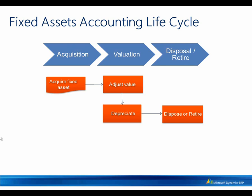An asset can be transferred from one financial dimension to another, such as one department to another department. An asset can be split to another asset if you need to further componentize the fixed asset. You can also record additional activity to an asset that does not impact valuation or service life.